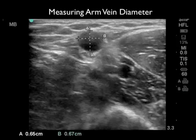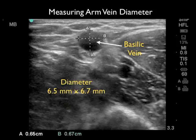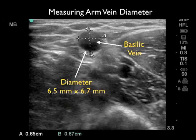Now let's take a look at a better target. This is a basilic vessel, and we can see that the diameter is much larger than the last brachial vein, measuring 6.5 mm by 6.7 mm. This would have a very high success rate in terms of cannulation with an ultrasound-guided IV. We can also see that the vessel depth is relatively superficial, again making it more amenable to a cannulation attempt.